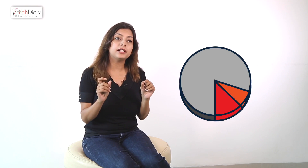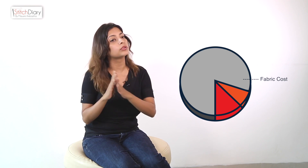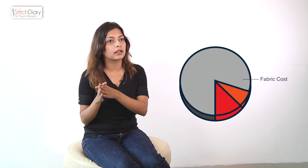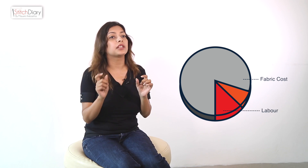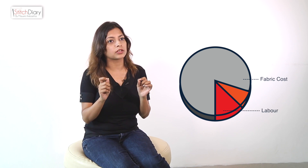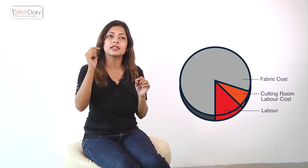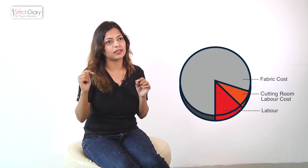Fabric is the biggest chunk of the cost — 50 to 70% of the garment cost goes into fabric. Labour is 10 to 15% of the cost, and cutting room labour cost is much smaller. Therefore, fabric is the major influencer on the cut order planning process and we should always try to minimise it.